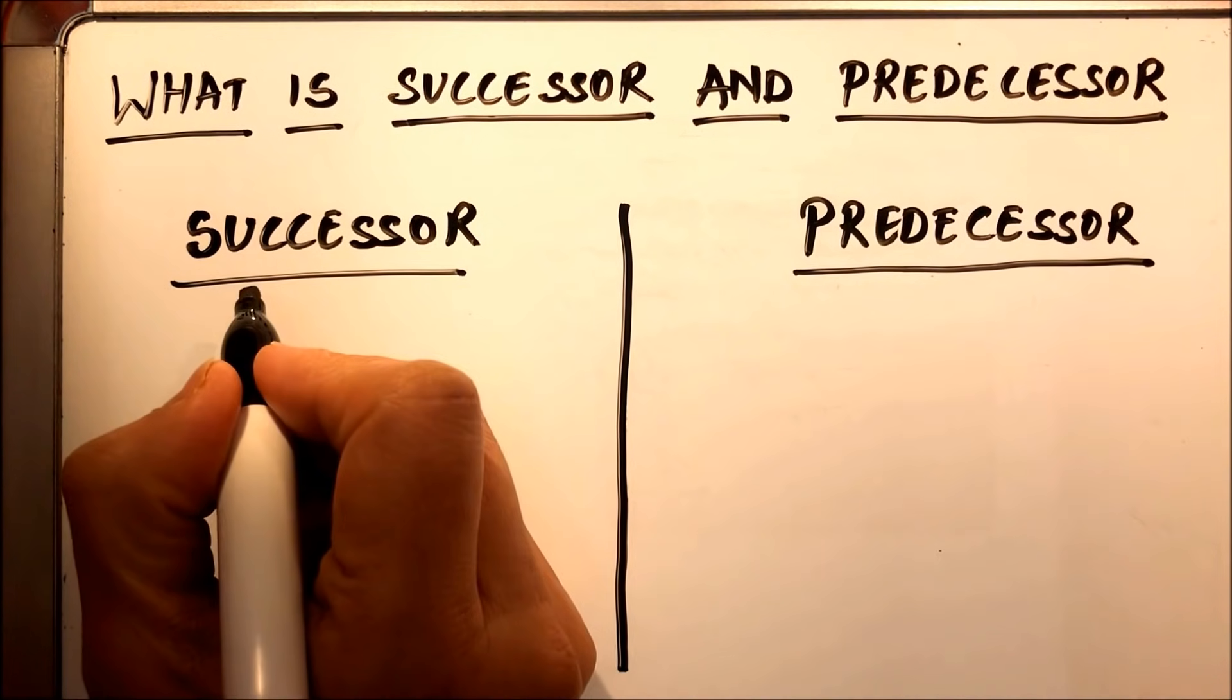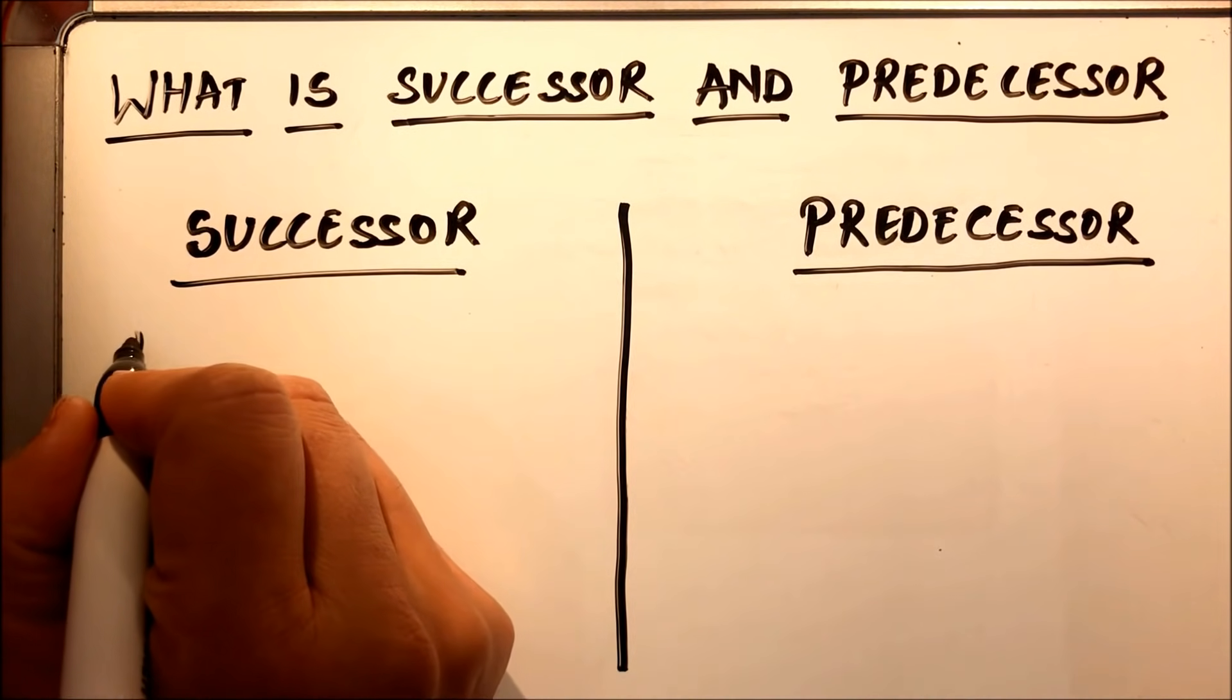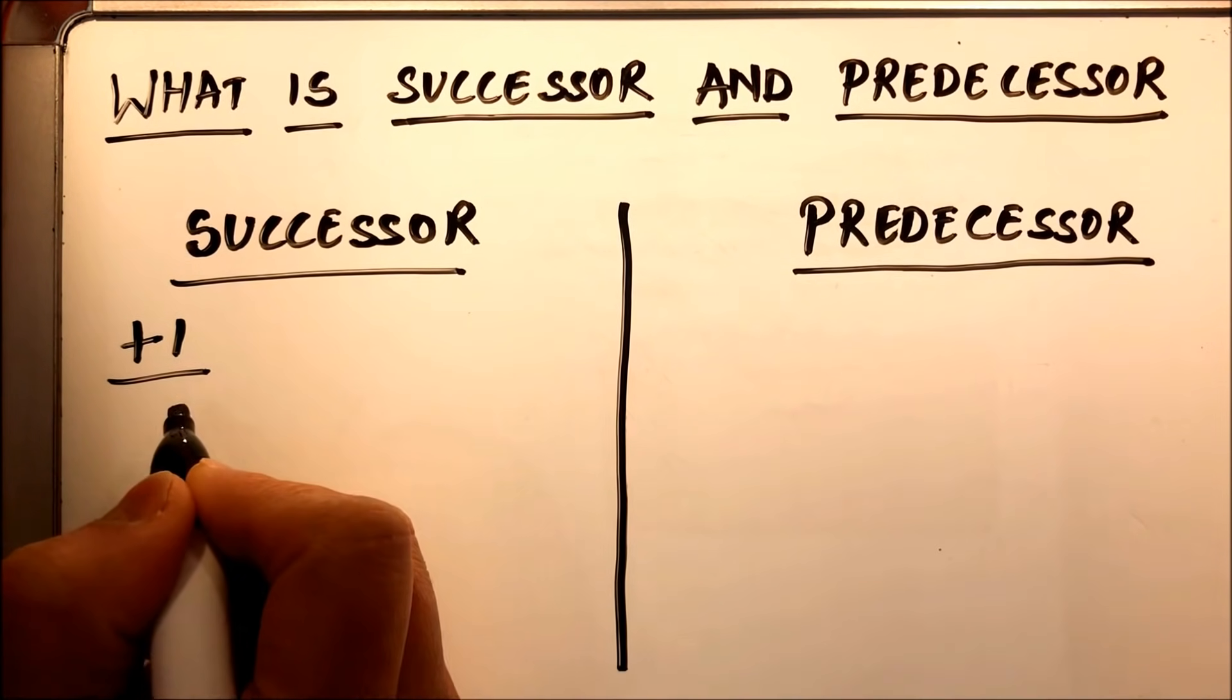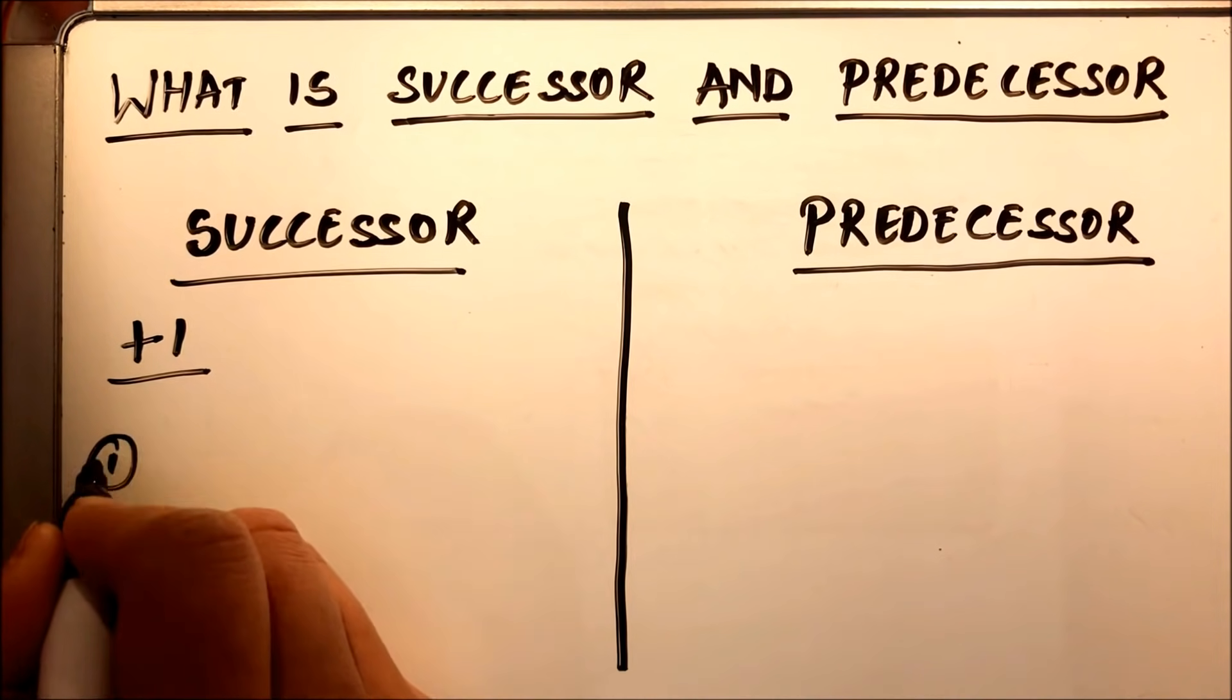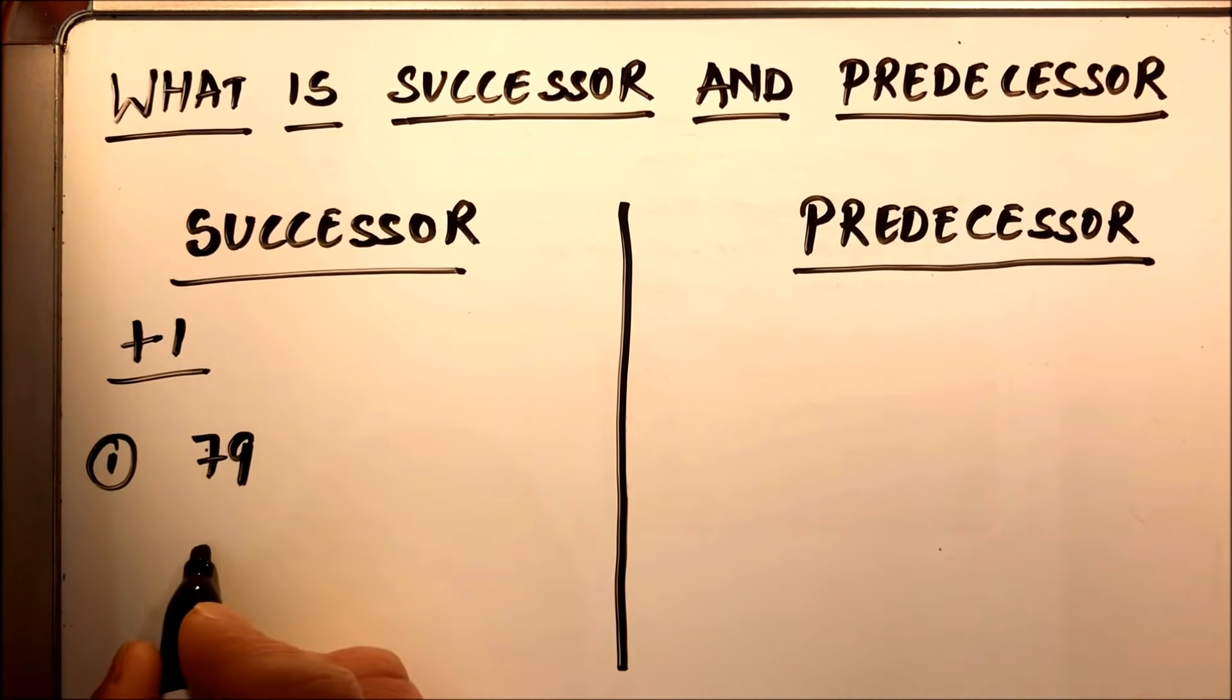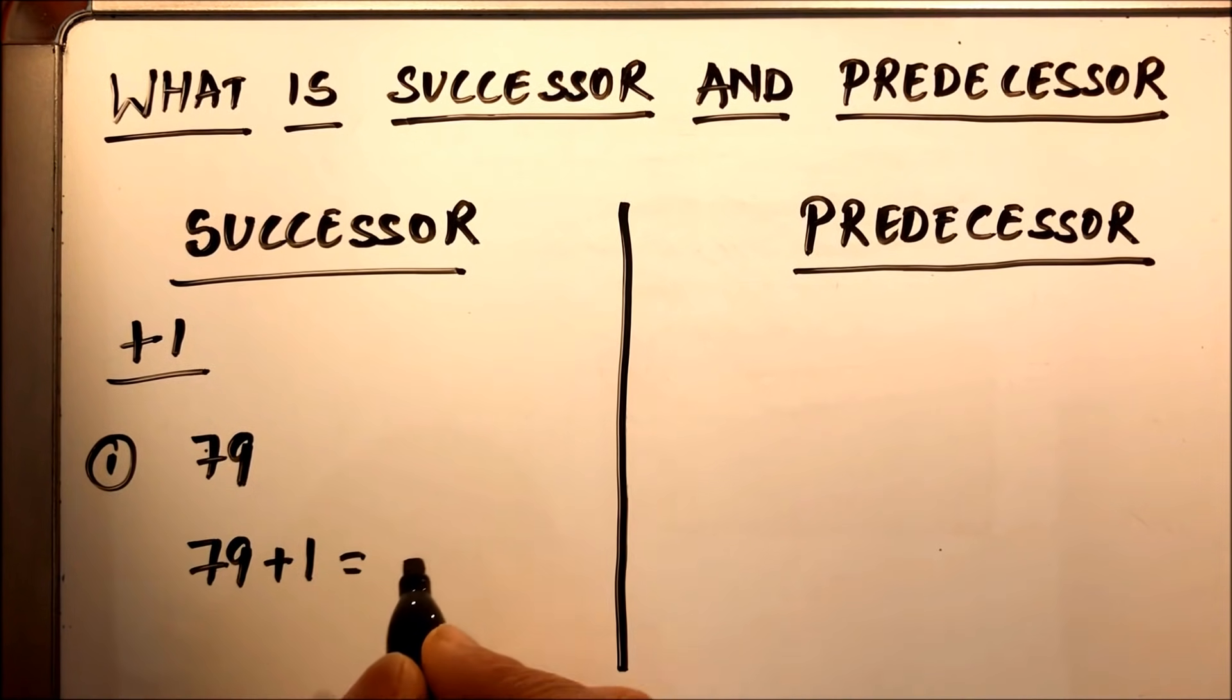A successor is a number which is one more than the given number. So suppose you need to find out the successor of 79. The successor of 79 will be 79 plus 1, which is 80.